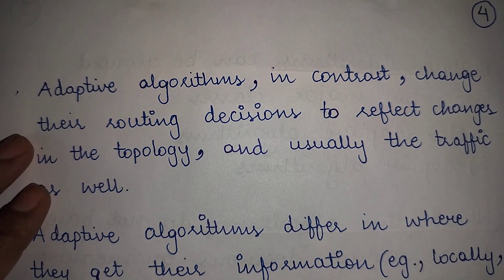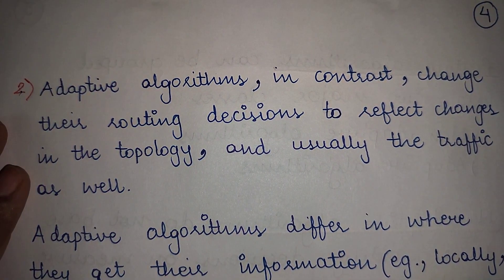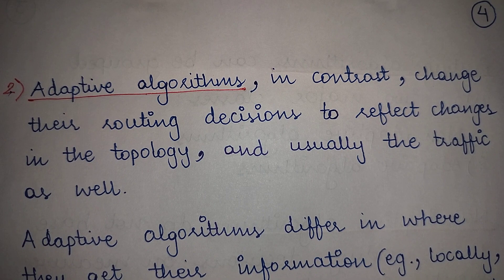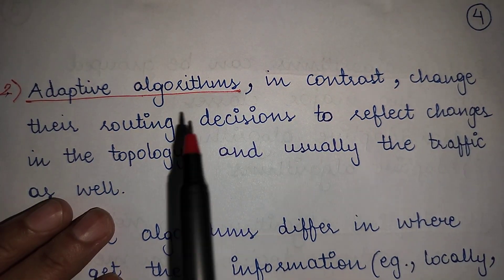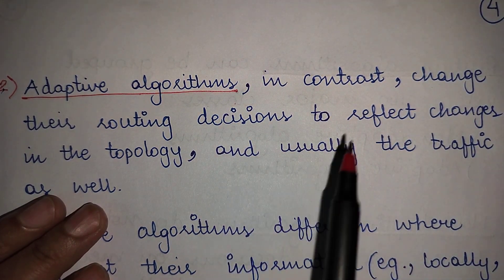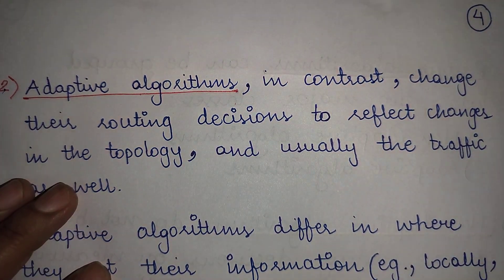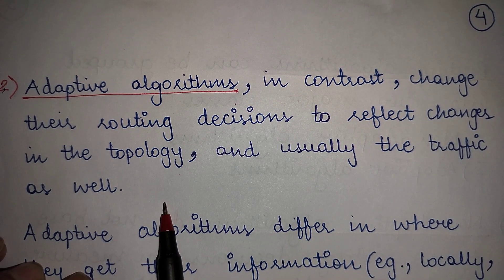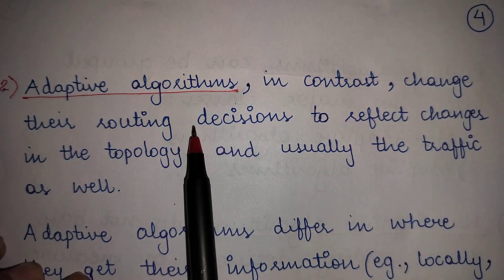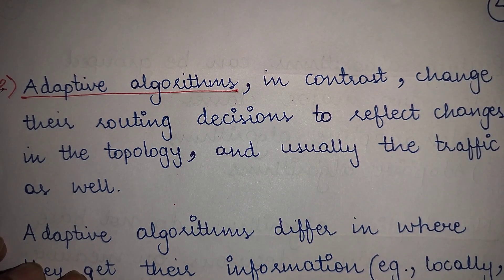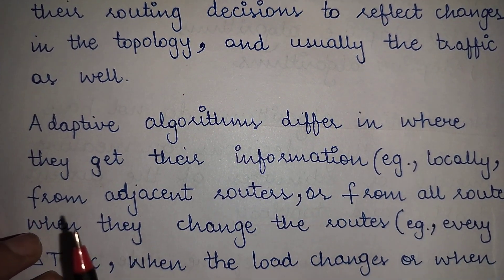The next category is adaptive routing algorithms. As the name suggests, they are quite adaptive to their environment — in contrast to non-adaptive algorithms. These algorithms adapt themselves according to their environment: they change their routing decisions to reflect changes in the topology and usually the traffic as well. As and when the topology or traffic conditions change, adaptive routing algorithms update their routing tables and change the route accordingly.